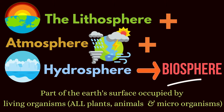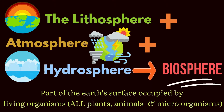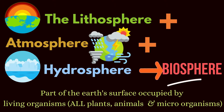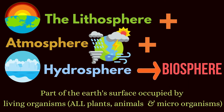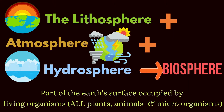What is the lithosphere? It is the rigid outermost shell of the earth. And what is the atmosphere? It is the layer of gases surrounding the earth. And the hydrosphere — it is the total amount of water on earth. So all these combine together and form the biosphere.